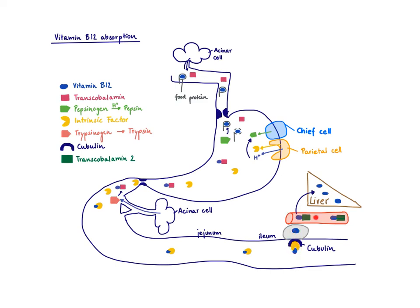In the blood, another transporter called transcobalamine 2 is waiting for the vitamin B12. It brings the vitamin B12 to the liver, where our stores of vitamin B12 are kept. This concludes the video on absorption of vitamin B12.